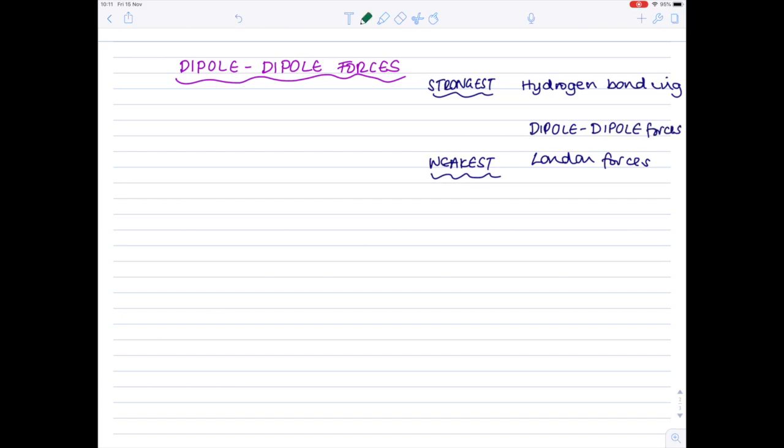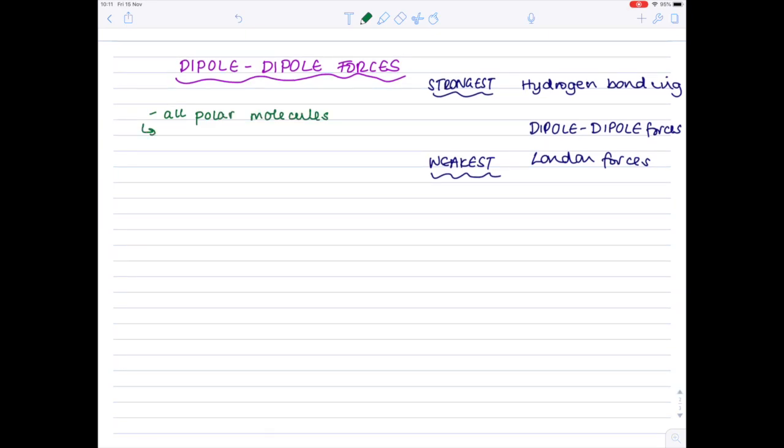So what scenario do we need for dipole-dipole forces to exist? They exist in all polar molecules, and the crucial thing here is they must have a permanent dipole. If it was an instantaneous one, then we'd be looking at London forces. So crucially, we need a polar molecule with a permanent dipole.